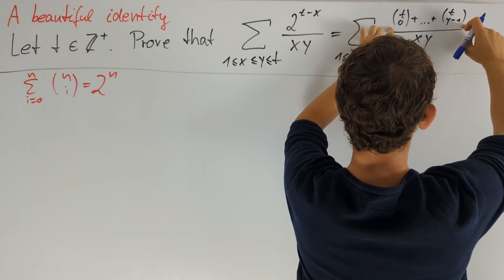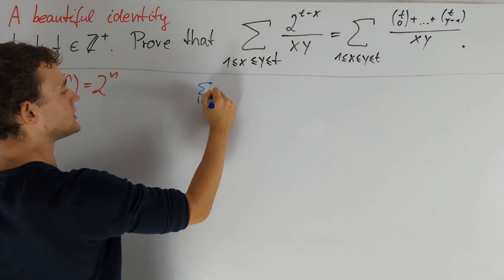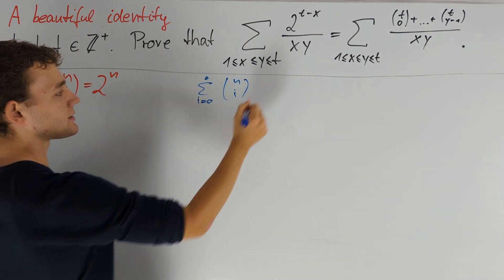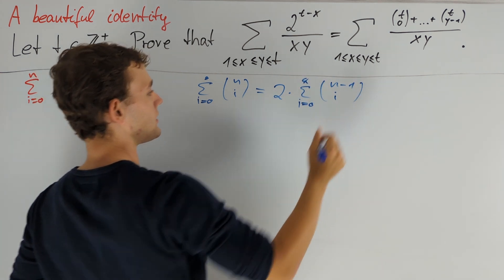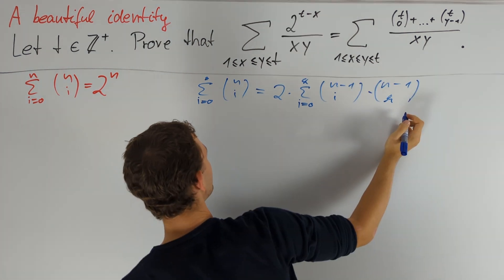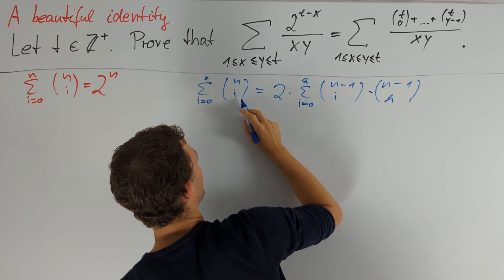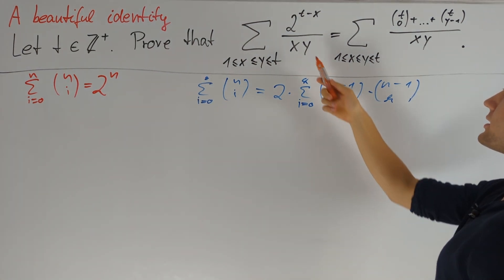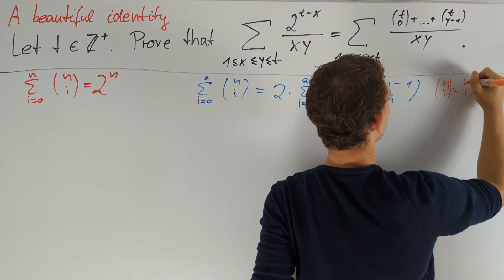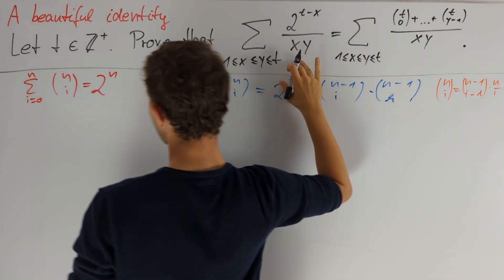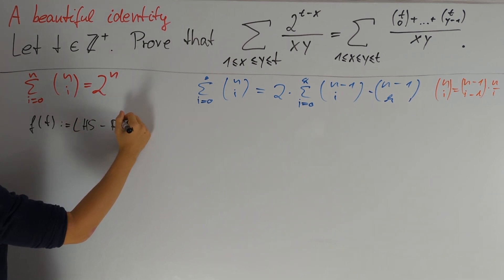Dealing with the sum of binomial coefficients that stops at y−1 is more difficult. We will use the fact that the sum over i from 0 to k of (n choose i) equals 2 times the sum of i from 0 to k of (n−1 choose i) minus (n−1 choose k). This follows from the identity (n choose i) = (n−1 choose i−1) + (n−1 choose i). Also, to get rid of the denominators xy, we use (n choose i) = (n−1 choose i−1) times n/i. Let us denote f(t) as the left-hand side minus the right-hand side, so we want to prove f(t) = 0.